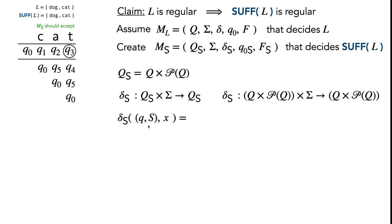So q is our old state, S is our set of old states, and x is our new character that we're reading. And we have to output one old state and a set of old states. So we know it's a tuple, and we have to fill in these parts.